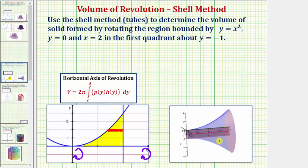Whenever using the shell method to determine a volume of revolution, it's helpful to sketch a rectangle in the bounded region that is parallel to the axis of rotation. We'll use this red rectangle to help set up the integral. If we rotate this rectangle about y equals negative one, we get one shell of volume. When we have a horizontal axis of rotation, we use the formula: volume equals two pi times the integral from c to d of p(y) times h(y) dy, where p(y) is the radius function and h(y) is the height function. Notice how the thickness of this rectangle is delta y, which indicates we integrate with respect to y.